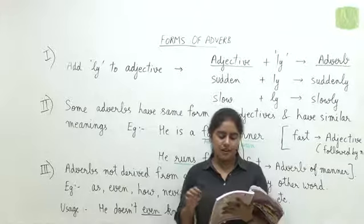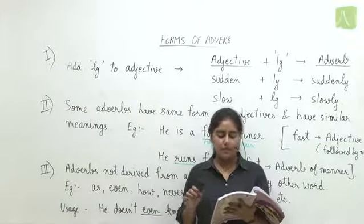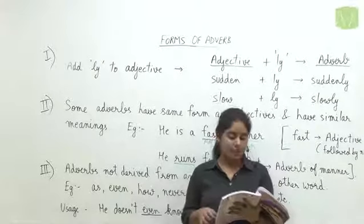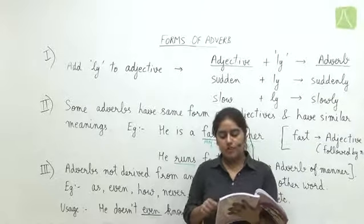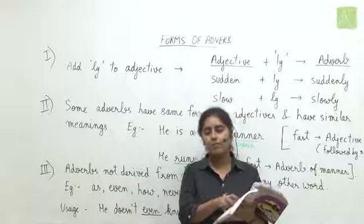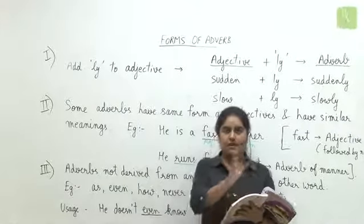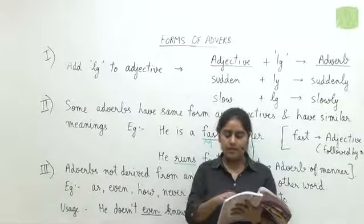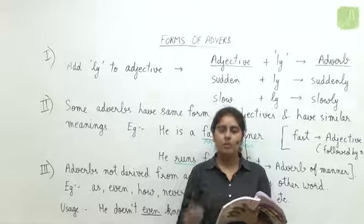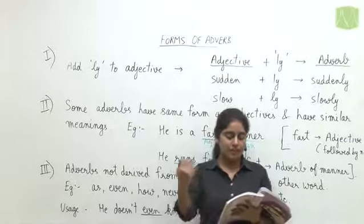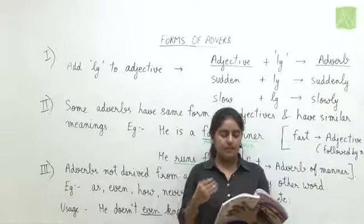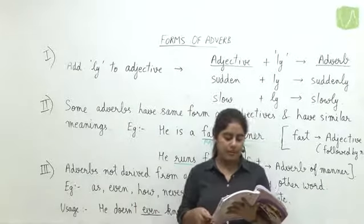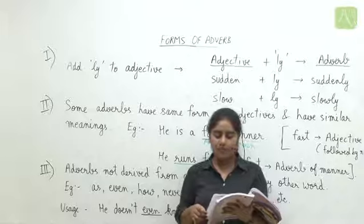Question six: 'Alex ___ put up the bookshelves. It was too difficult for me to do on my own.' 'Suddenly' is incorrect. The second part of the sentence shows a contrast — it was difficult for me but easy for Alex. So 'easily' is the correct answer. Option B is correct.